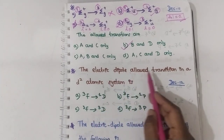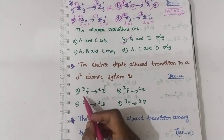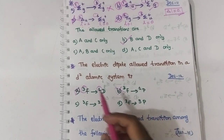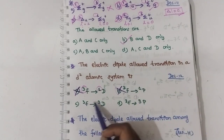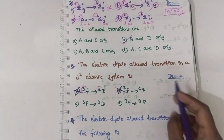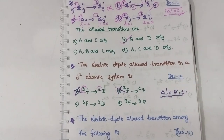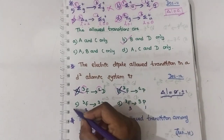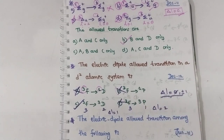For the electric dipole allowed transitions in d-type atomic systems, three options are given. First, check spin multiplicity — two options have different spin multiplicities, so eliminate them. For the remaining option, ³F to ³D: multiplicities are same. Checking Laporte: F has L=3, D has L=2, so ΔL = 1 — that is Laporte-allowed. The other has ΔL = 2, which is forbidden. So the ³F to ³D transition is the allowed one.